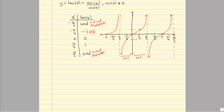Let's start with the domain. This function is defined everywhere except at the vertical asymptotes, and these occur at every odd multiple of π/2. The technical way to say that is: all values of x such that x cannot equal (2n + 1) · π/2, where 2n + 1 creates an odd number, and n is any integer. For the range, the lowest value goes toward negative infinity and the highest goes toward positive infinity.